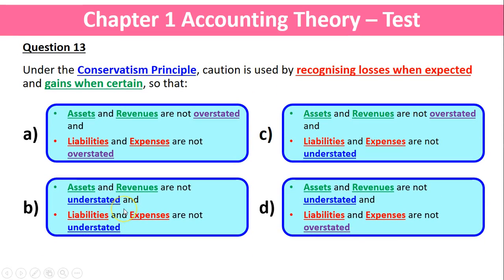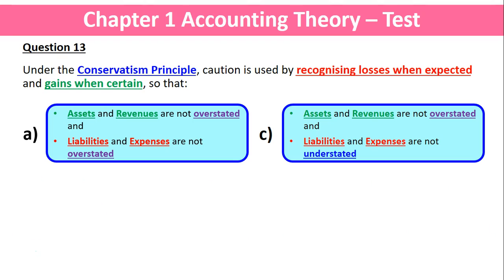Going back to the question, we've got a lot of answers, so let's try to eliminate what we can. Conservatism is about being cautious and recognising the bad things, but not the good things until they're certain. The first dot point for each answer says assets and revenues are either not overstated or understated. Being conservative means keeping assets and revenues not too high, so we keep 'not overstated' and eliminate 'not understated' — removing options B and D. That leaves us with A and C.